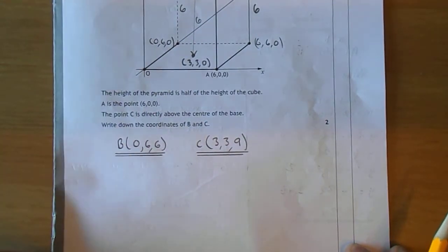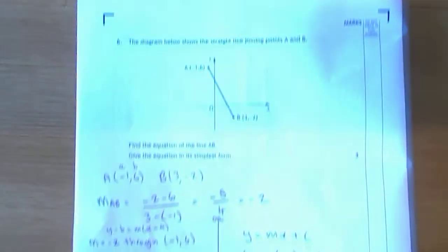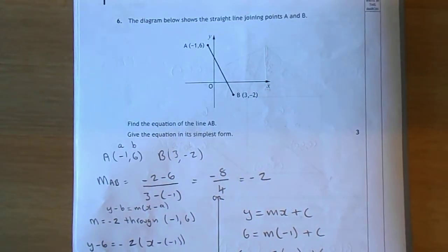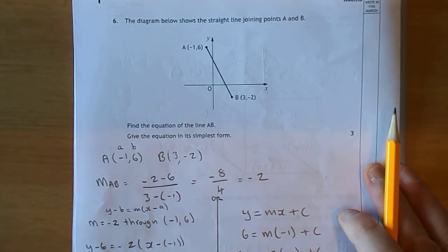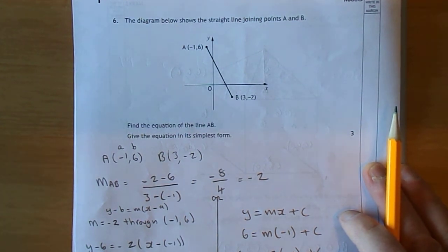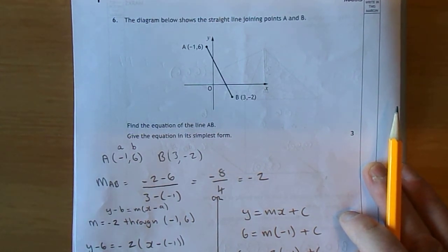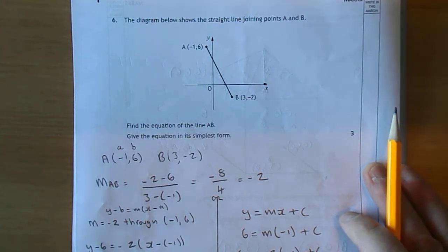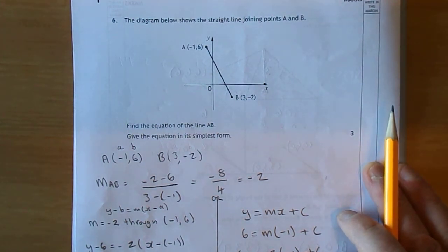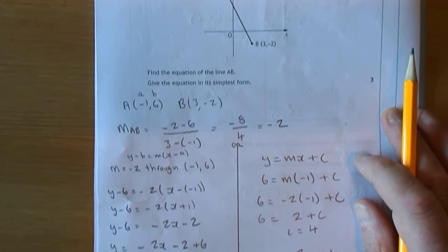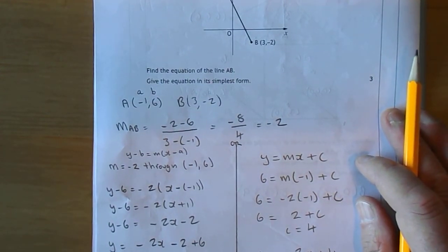On to question 6. Question 6 presents you with a straight line drawn on an X, Y axis. And of course the usual question would be, what is the equation? Right, there's two ways to get this depending on what your teachers, how your teachers taught you. I'll attempt to show you both ways and see which one you prefer. Now, both methods need you to get the gradient.